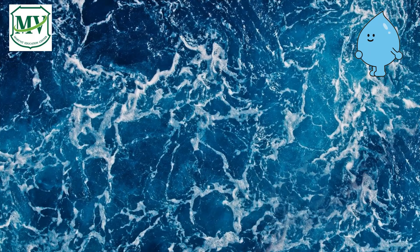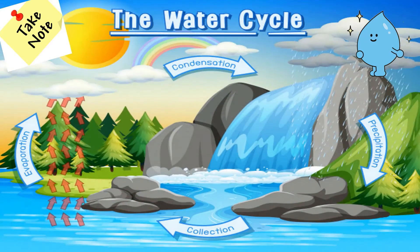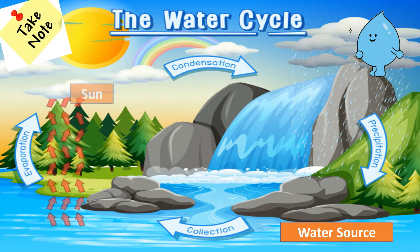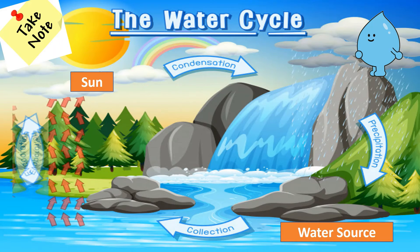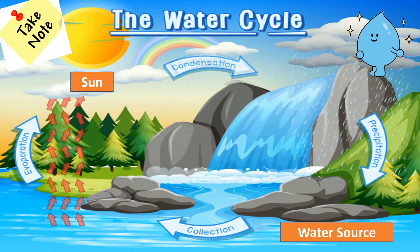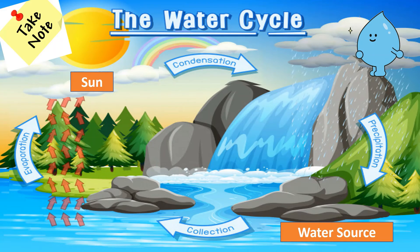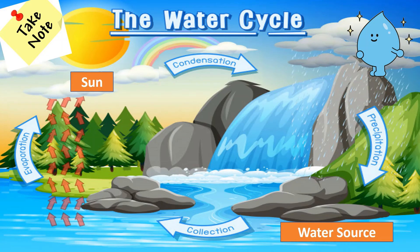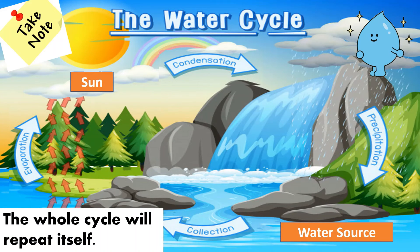Let's sum it up. These are the processes of the water cycle. The sun causes the water from a water source to evaporate and become water vapor — this is evaporation. The next process is condensation, when the water vapor cools and turns into tiny water droplets that combine to form clouds. And the last process is precipitation, or any form of water that falls back to the earth. The whole cycle will then repeat itself.